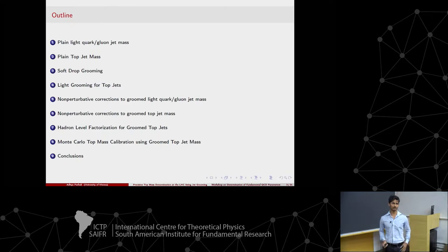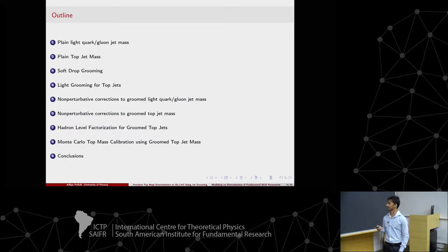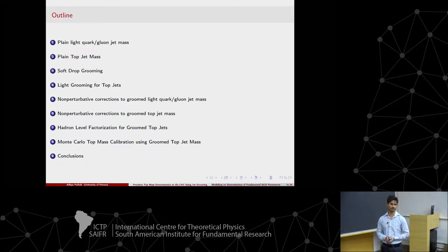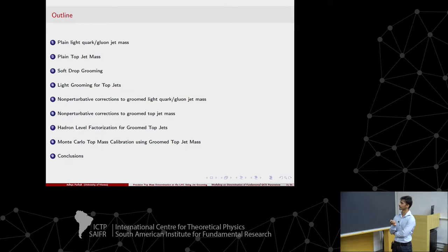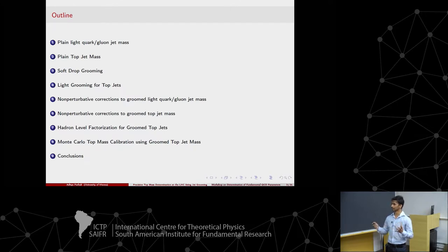Here's the outline of my talk. There are several steps one has to go through to get to step seven, which is the hadron-level factorization for the groomed top jet mass. It is a complex observable with various components. I keep going back and forth between results for light quarks/gluon jets and top quarks, because many components can be recycled. They are simpler to understand for light quark and gluon jet mass, where you don't have effects such as decay or the top threshold.